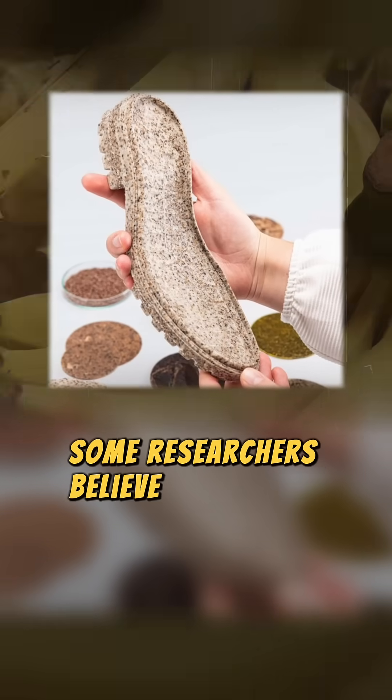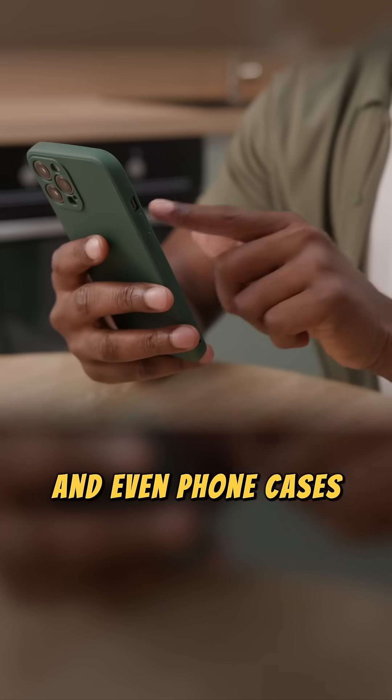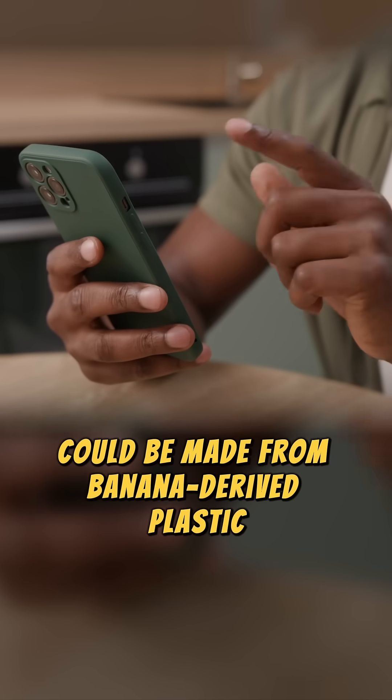Some researchers believe that in the future, items like grocery bags, food containers, and even phone cases could be made from banana-derived plastic.